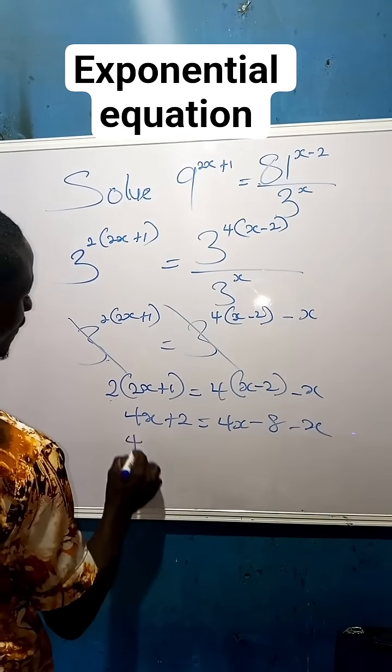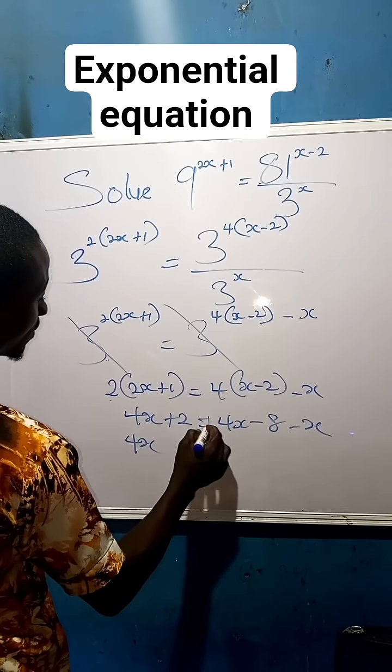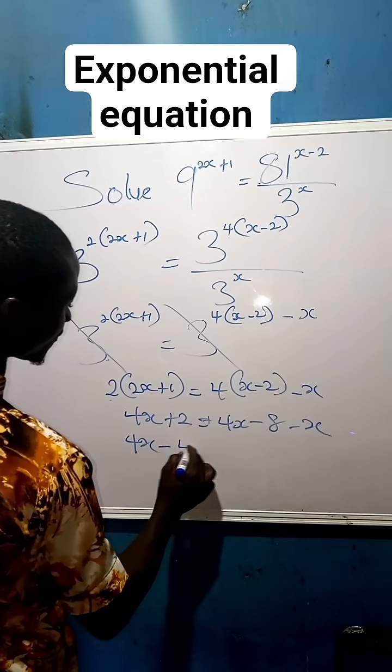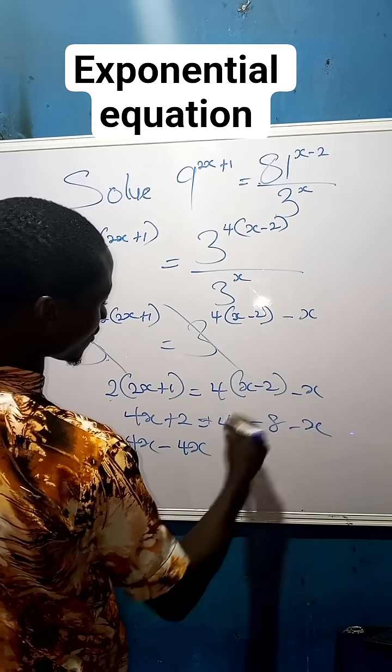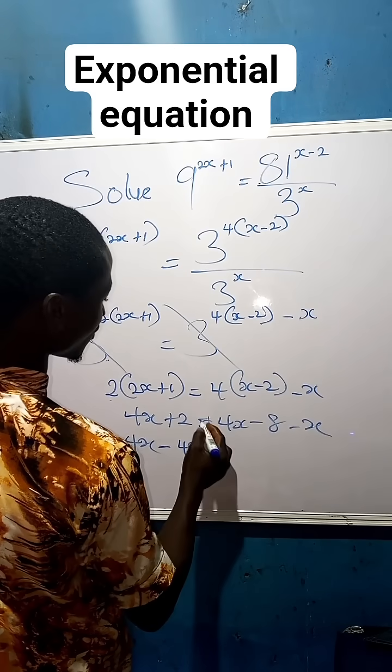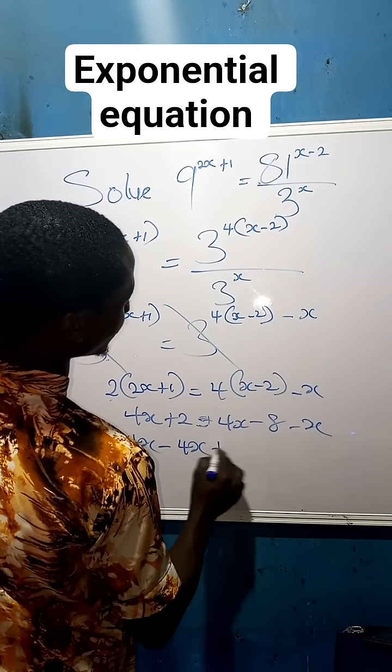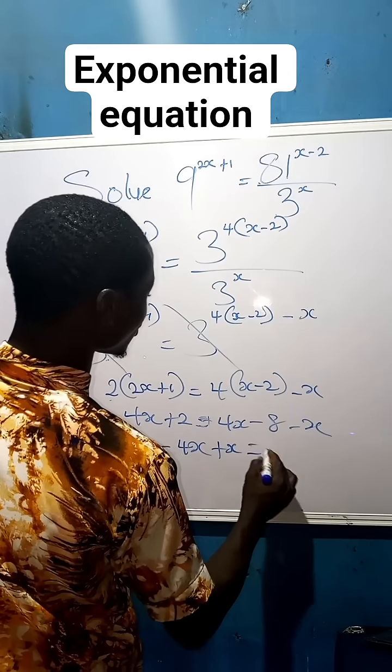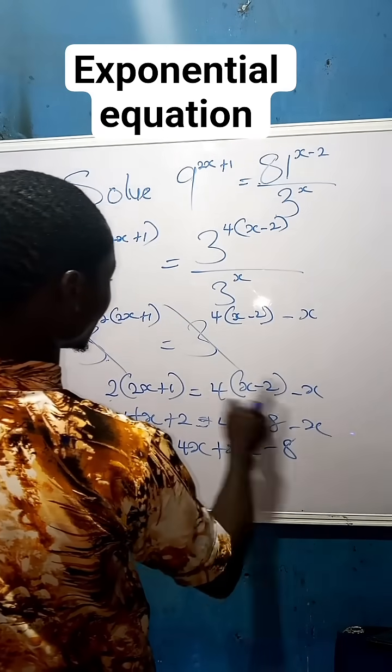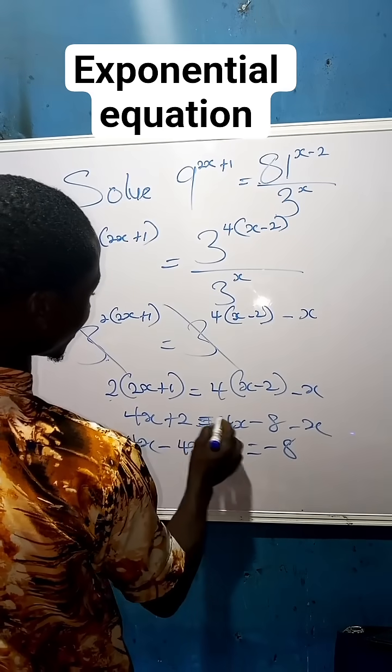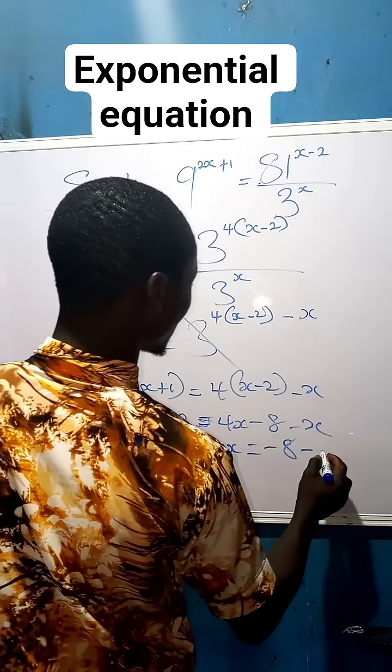Now we collect like terms. 4x comes here and becomes minus 4x. And this one comes here and becomes plus x. Equals to minus 8. This one moves here and becomes minus 2.